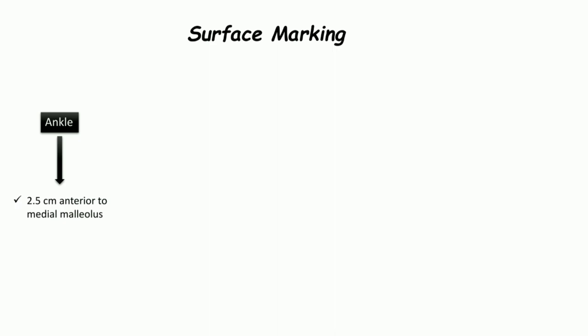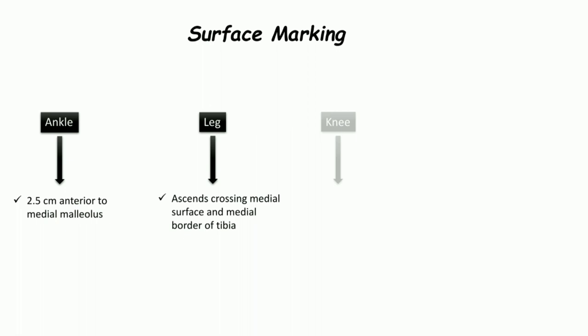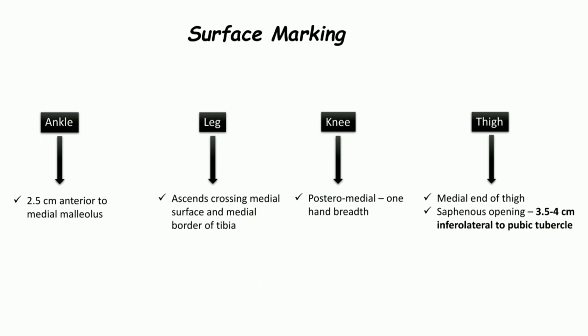Now what about the surface marking of the great subvenous vein? We can look at four different regions. At the ankle, the vein lies 2.5 centimeters anterior to the medial malleolus. In the leg, it passes along the medial border of the leg and the medial border of the tibia. At the knee joint, the vein lies one hand breadth posteromedial to the knee joint. In the thigh, it ascends along the medial border of the thigh and terminates by opening into the subvenous opening, which is situated 3.5 to 4 centimeters infralateral to the pubic tubercle.